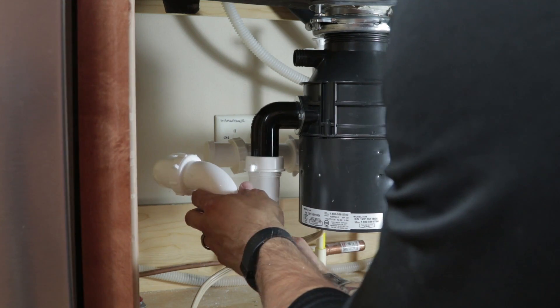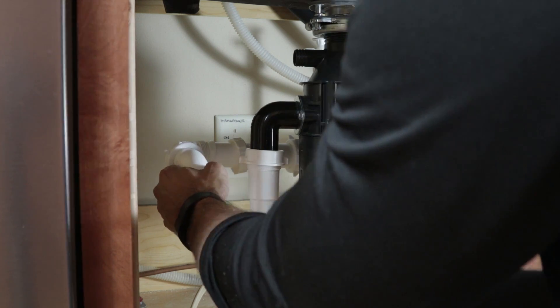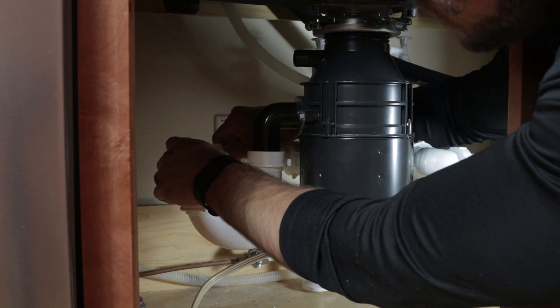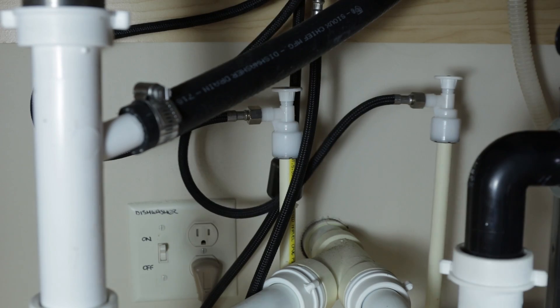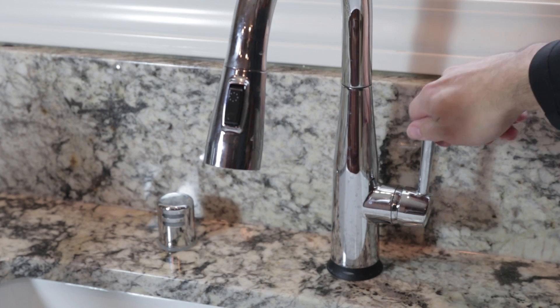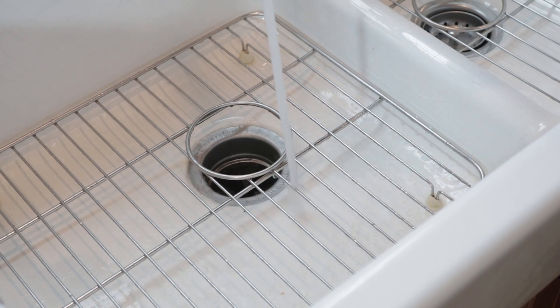Reattach the drain supply lines to the disposal as well as the wall drain. Then connect the disposal power supply. Turn the water supply back on and test your disposal by running the water and placing some small food items down the drain to grind.